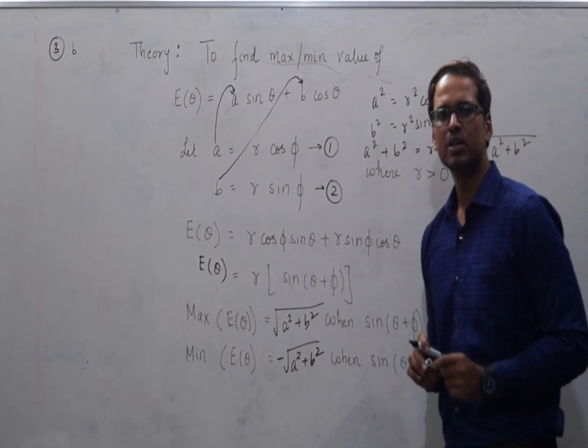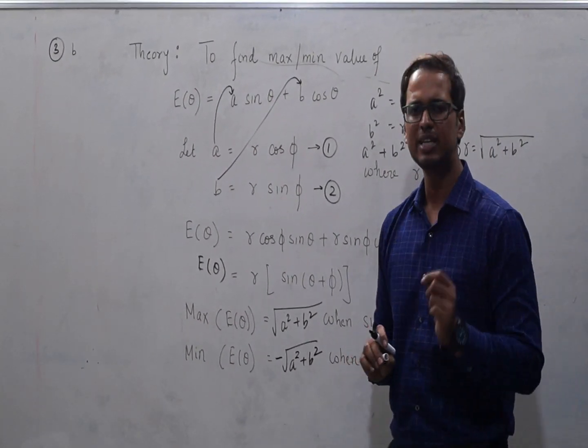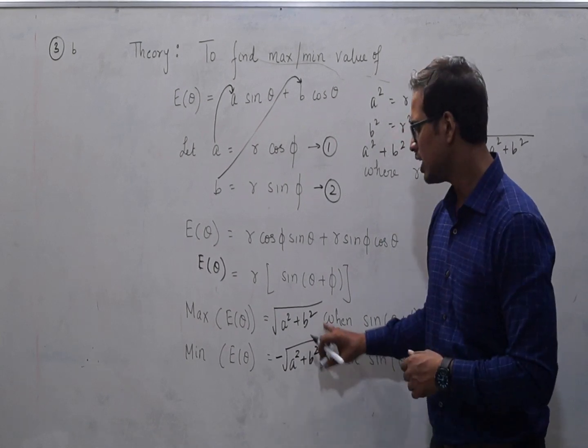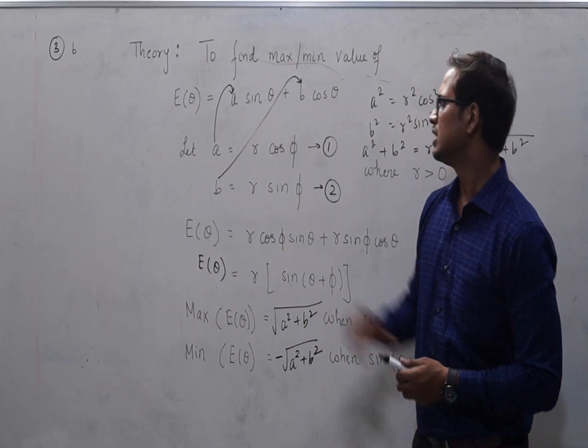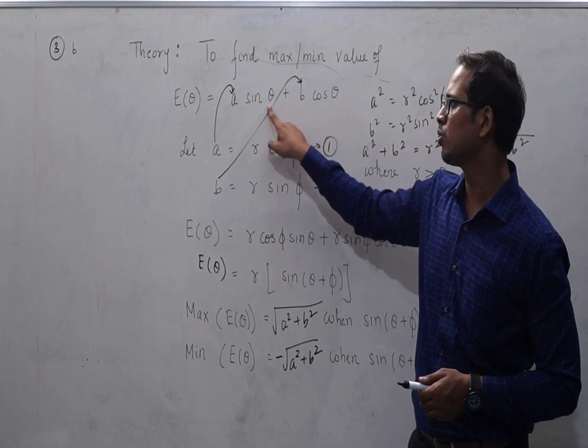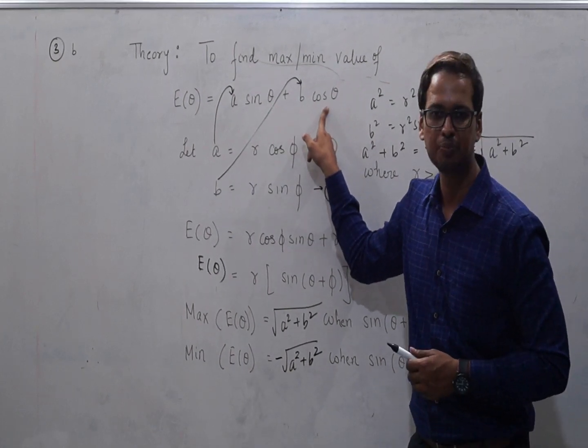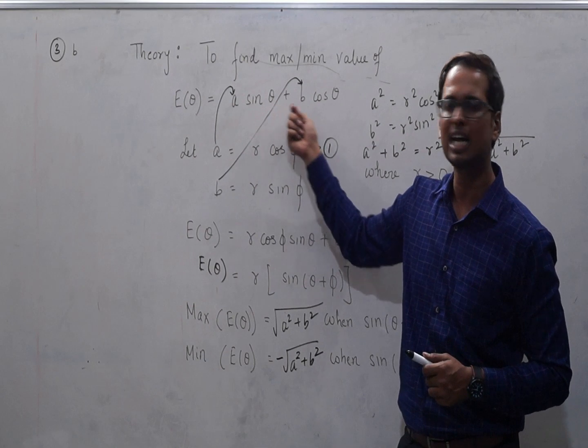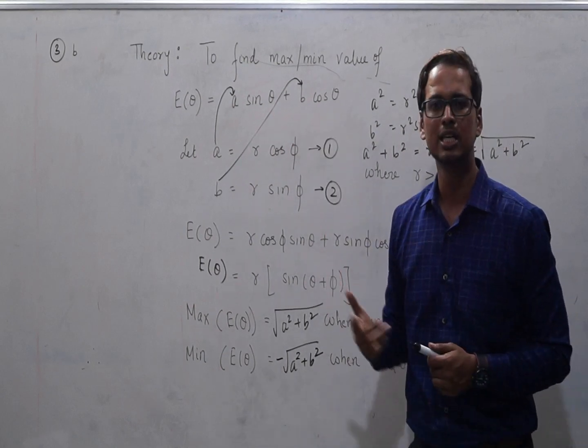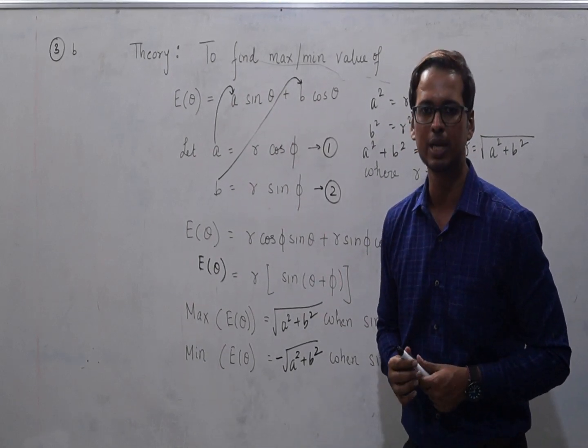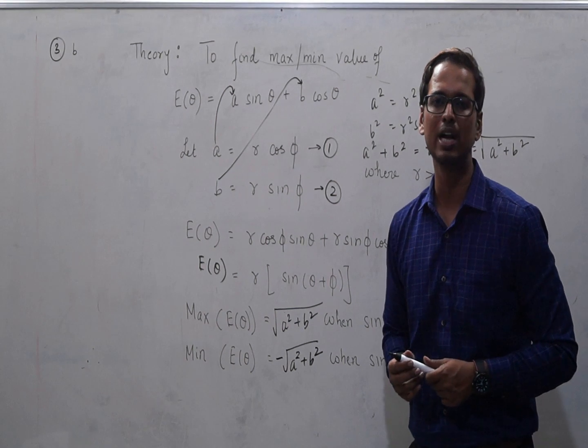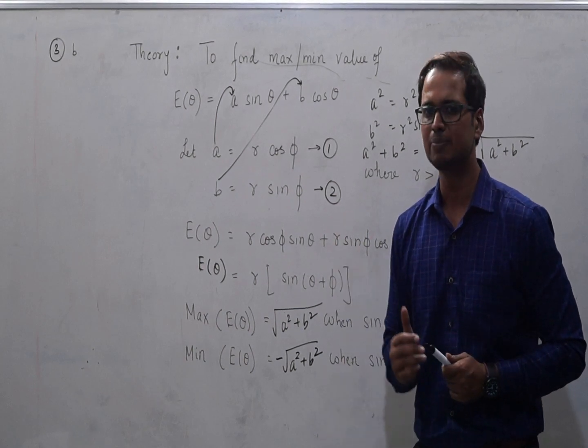Please note one thing. We need to use this formula very very cautiously. This formula is applicable only when the angles in this expression, both the angles should be same. For example, if you have a sine theta and b cos 2 theta, this formula will not work. So this is the theory which was required for you to solve part b of the question.